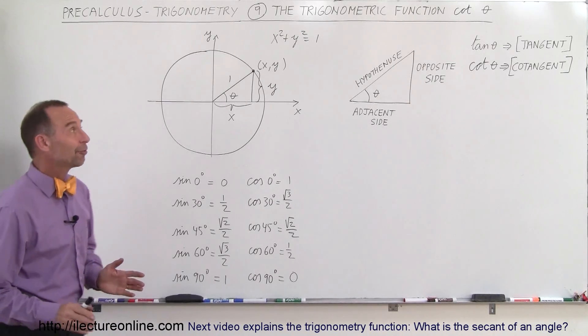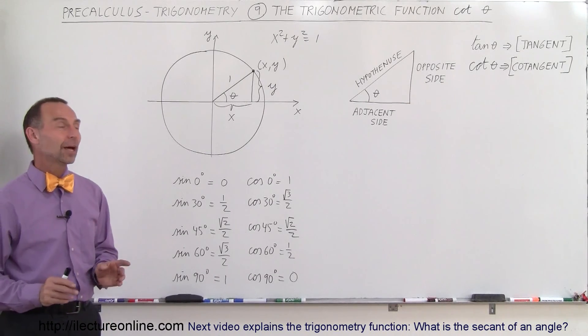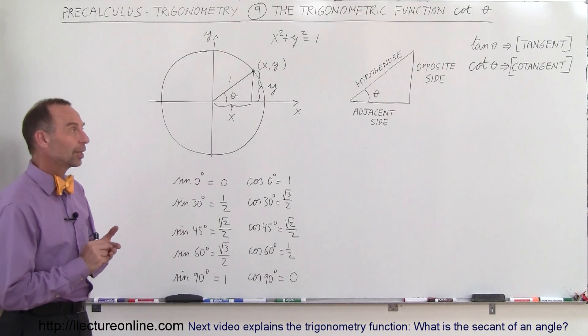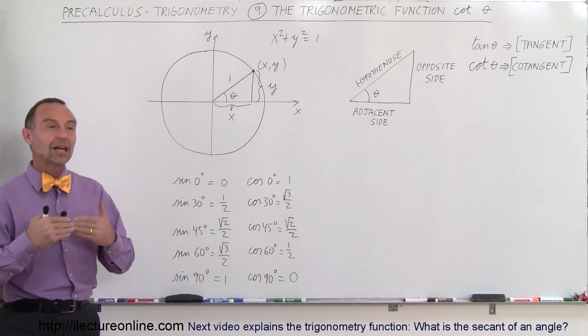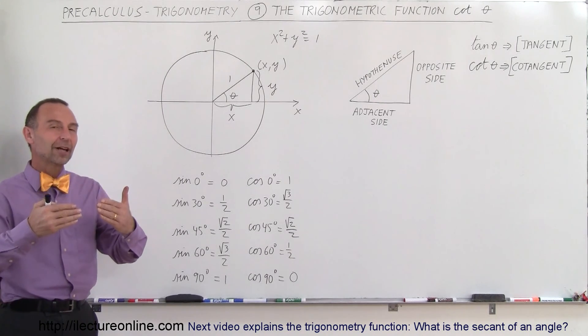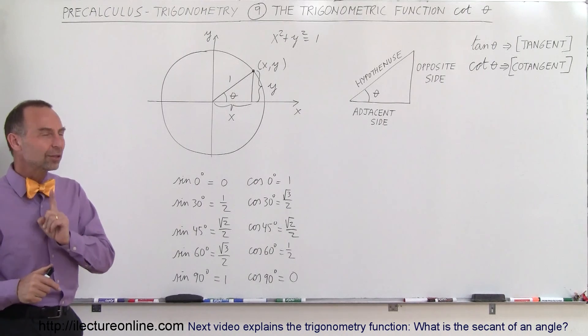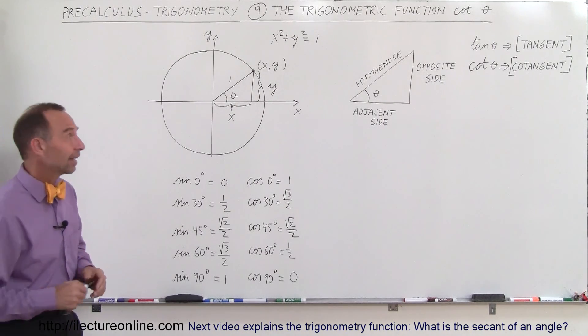Welcome to ElectronLine, and now for the cotangent of theta. Remember what the sine of theta was — the sine of theta was defined as the opposite side divided by the adjacent side. What do you think the cotangent of theta will be defined as?